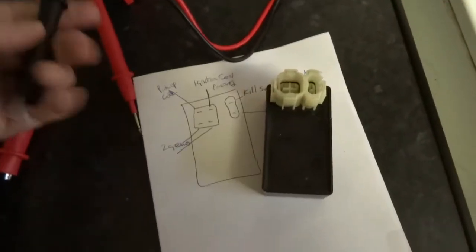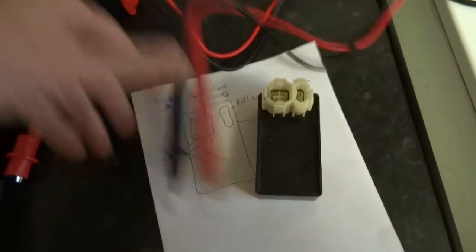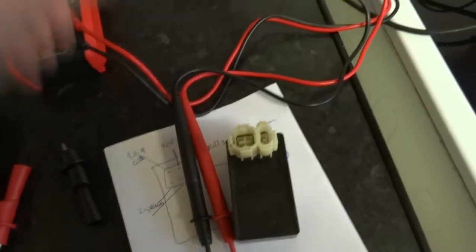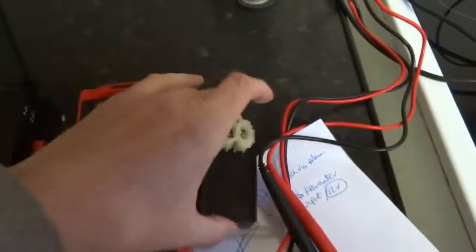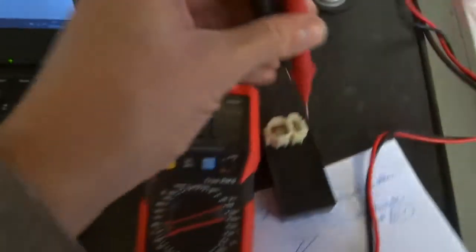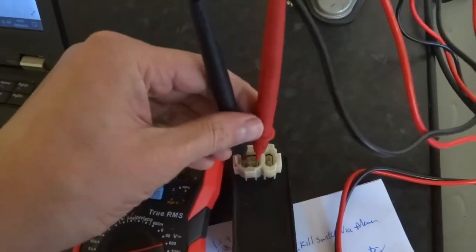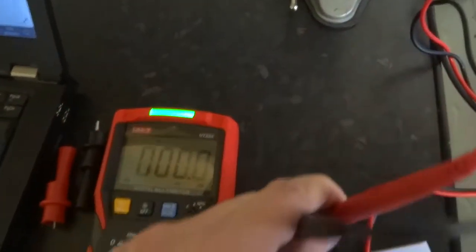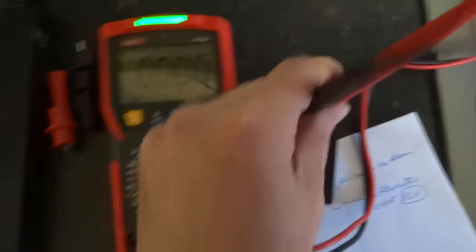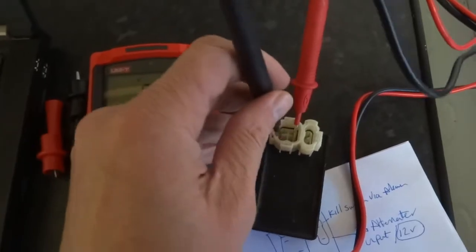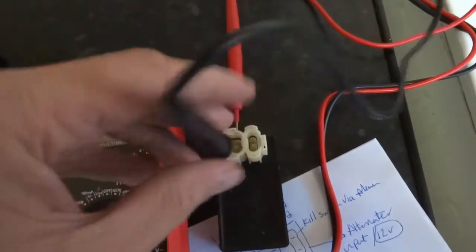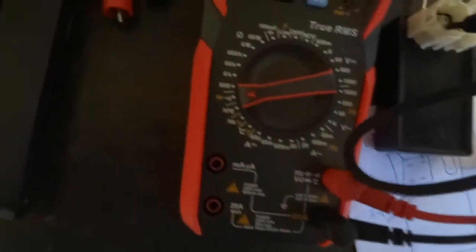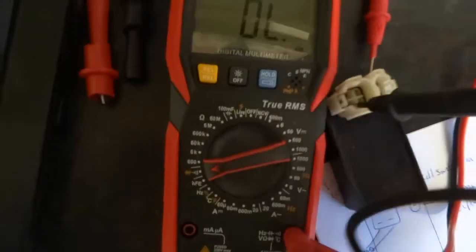I'll take them off, switch to continuity. So these two are shorted because they are two grounds, so I'm just going to leave one in there. Basically, because we don't really know which is which, just test them all to ground and make sure none of them are shorted.